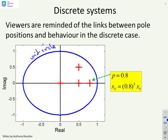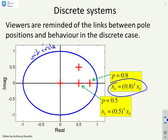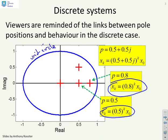What if you had a pole at 0.8? The corresponding behavior looks like x of k equals 0.8 to the power k times x of 0. What if you have a pole at 0.5? The behavior is x of k equals 0.5 to the k times x of 0, and you can do a similar trick if you have complex poles that appear in conjugate pairs.